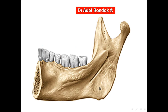This is the mandible. This is the mylohyoid line. Two muscles are attached to the mylohyoid line: the mylohyoid muscle, and the posterior end gives origin to the superior constrictor.